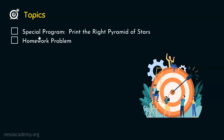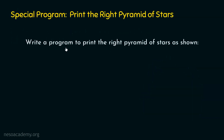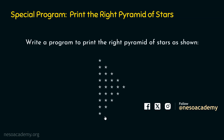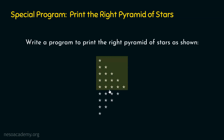Let's first understand how to write the program to print the right pyramid of stars. Before that, we need to observe the problem statement carefully. The task is: write a program to print the right pyramid of stars as shown. If we observe carefully, this pattern is quite familiar to us — we already learned how to print the right triangle pattern. The only difference here is that instead of numbers, now we have stars.